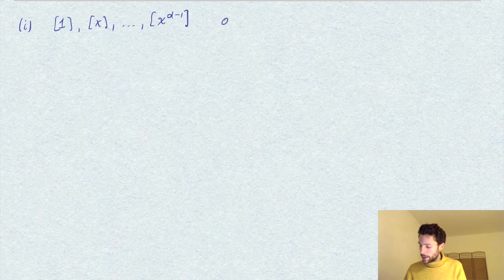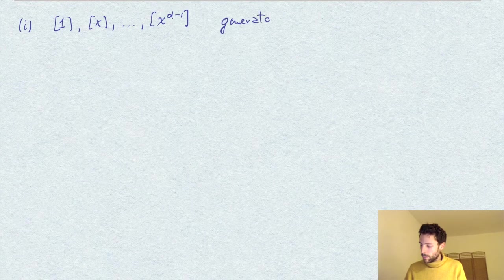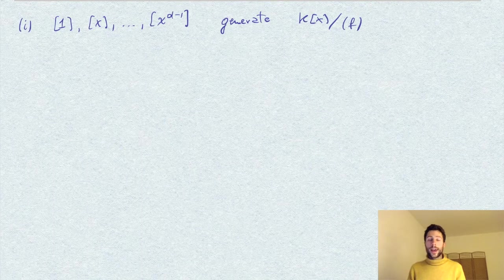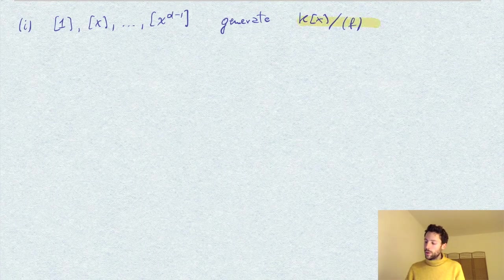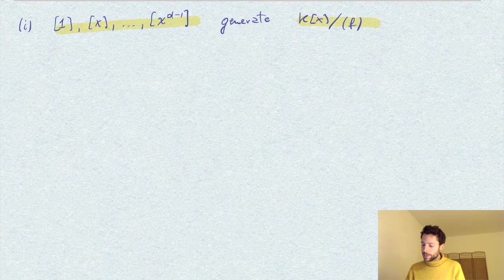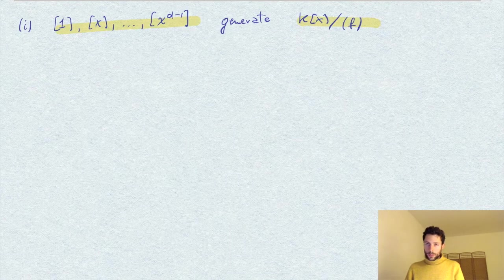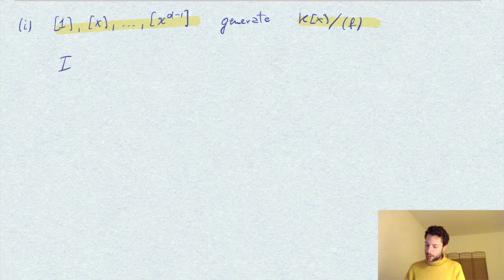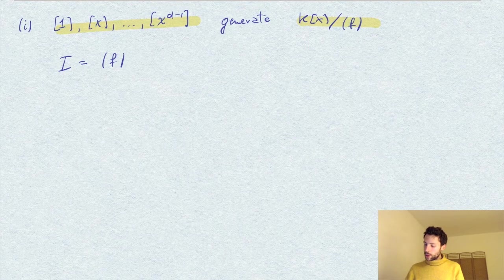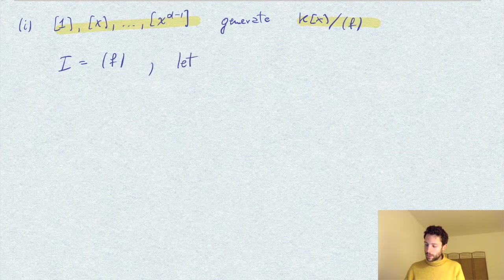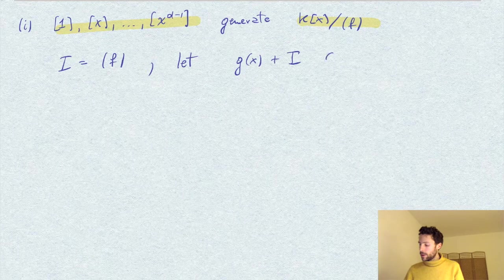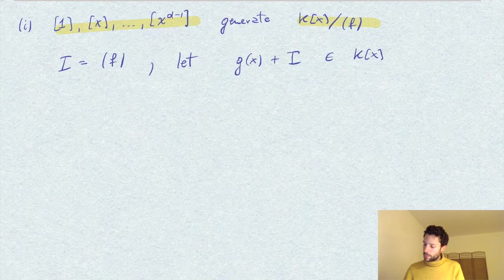To generate k[x]/(f) means every element in this quotient can be written as a linear combination of these classes. Let me indicate with the letter I the ideal generated by f. We pick an element in this quotient, let's call it g(x) + I, an element here in the quotient.